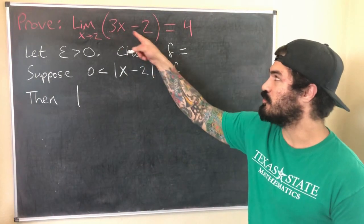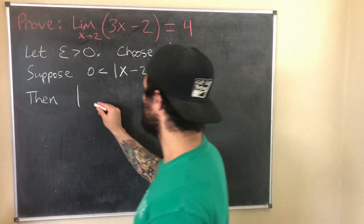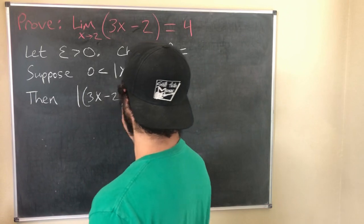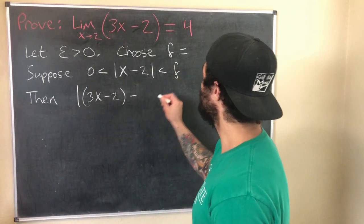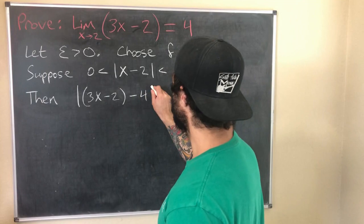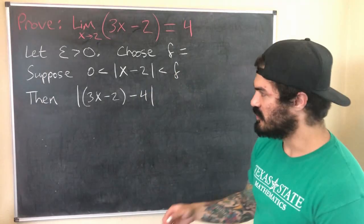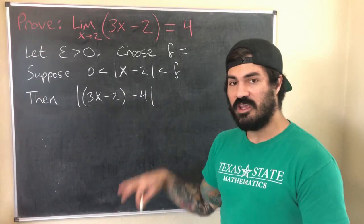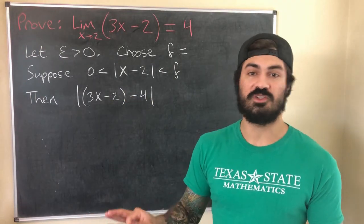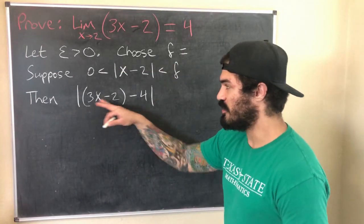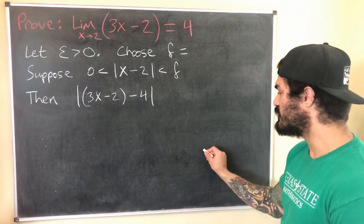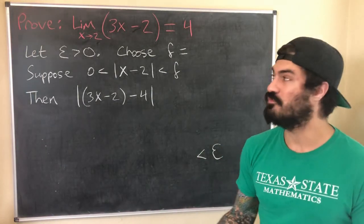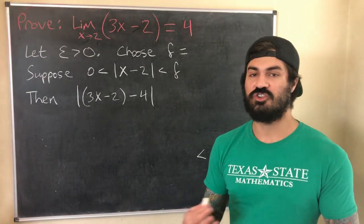And our f(x) in this case is 3x minus 2 - that's the function we're dealing with - so I'll put it in parentheses just to get in a good habit of using parentheses, minus L which is 4. As you can see in this case we don't need the parentheses but it's a good habit. So we want to take this expression and manipulate it and not assume anything we shouldn't be assuming, just use this assumption here to show that this is less than epsilon.